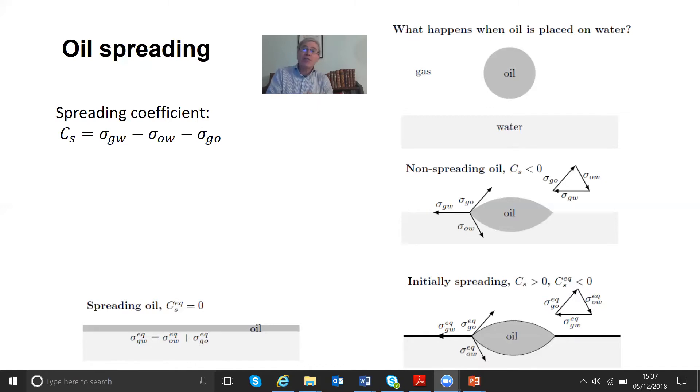And so the effective interfacial energy or interfacial tension of the gas-water interface is just that between oil and gas and oil and water. So the spreading coefficient is by definition zero. In equilibrium, the spreading coefficient has to be zero or negative.